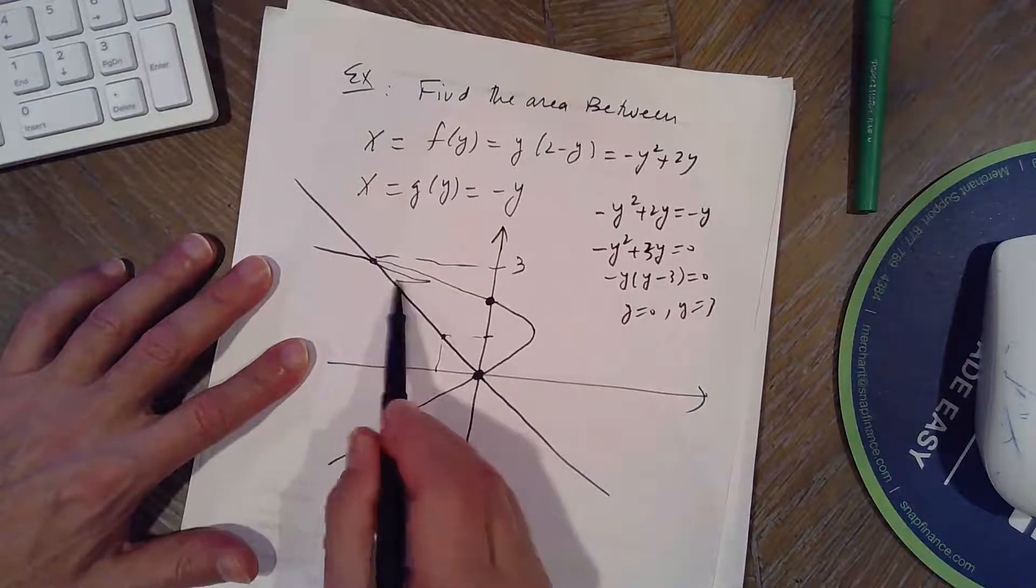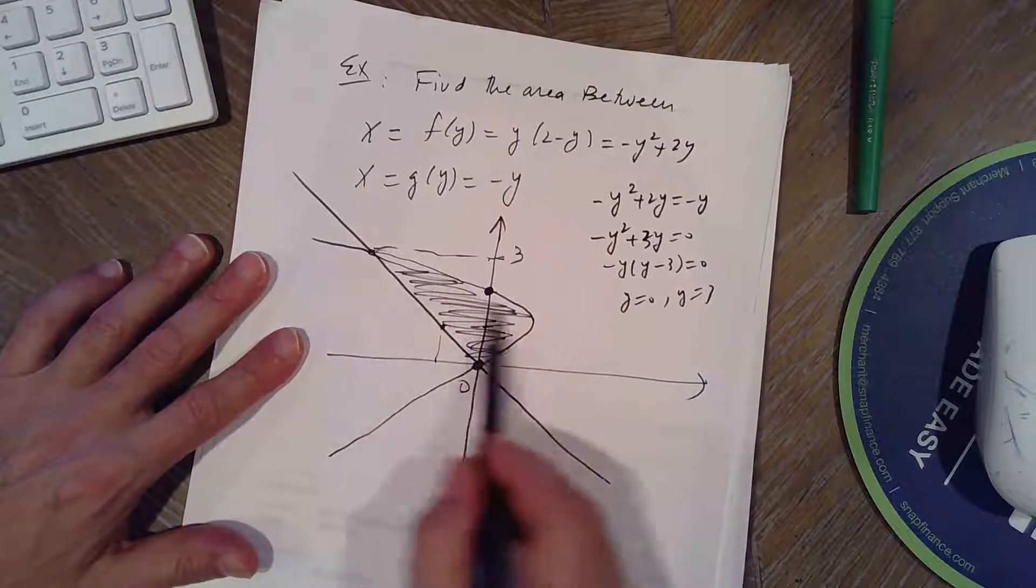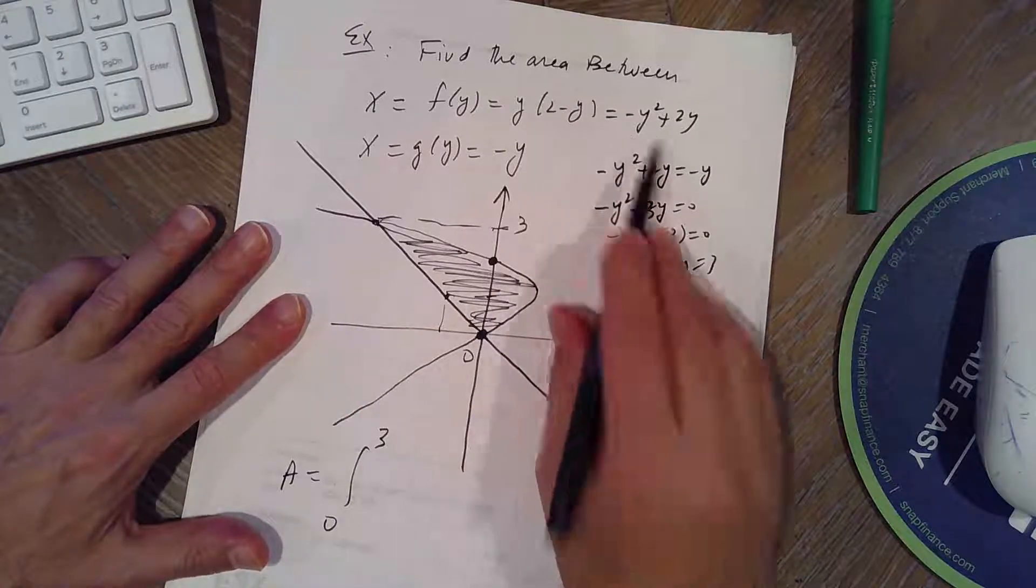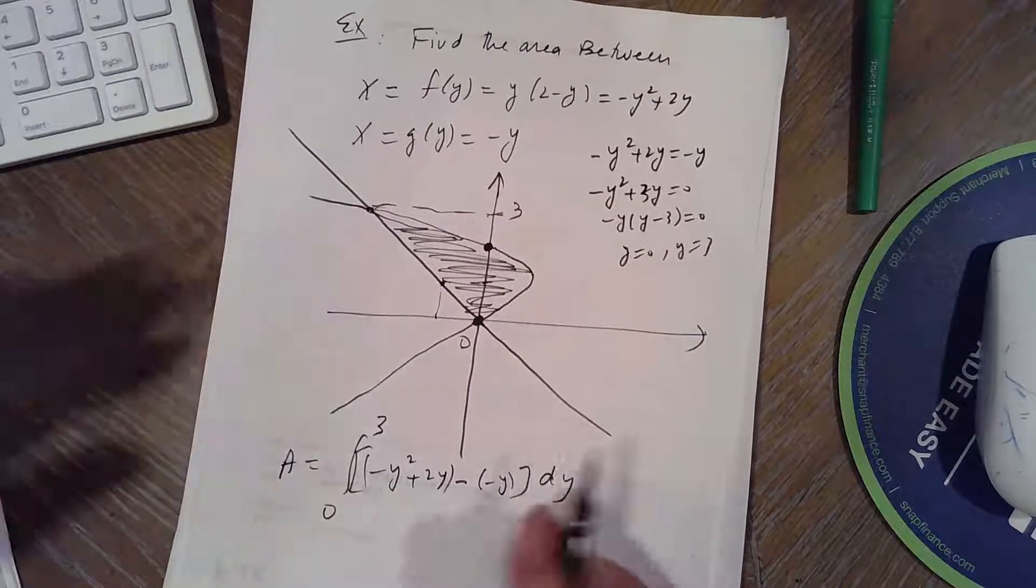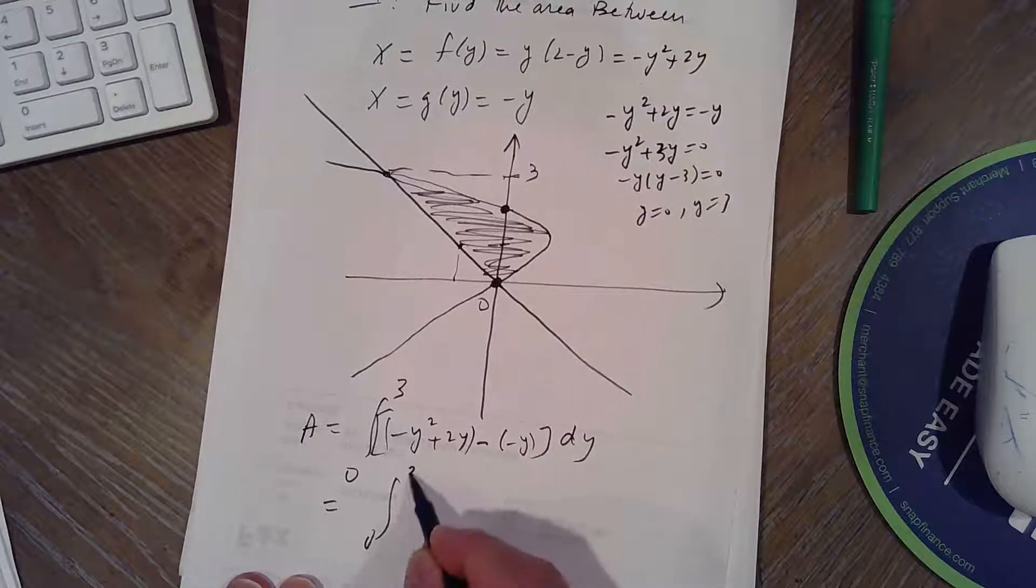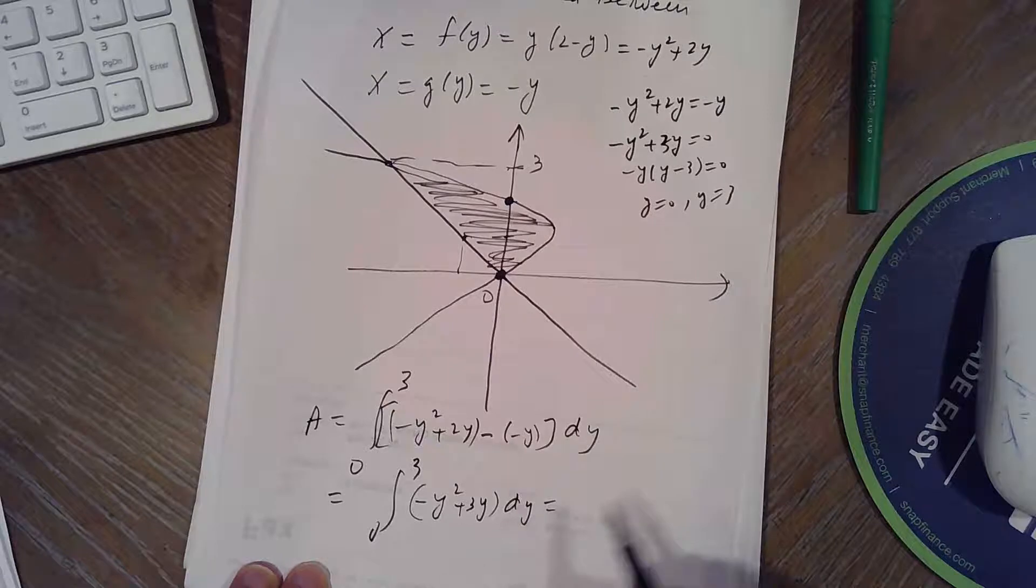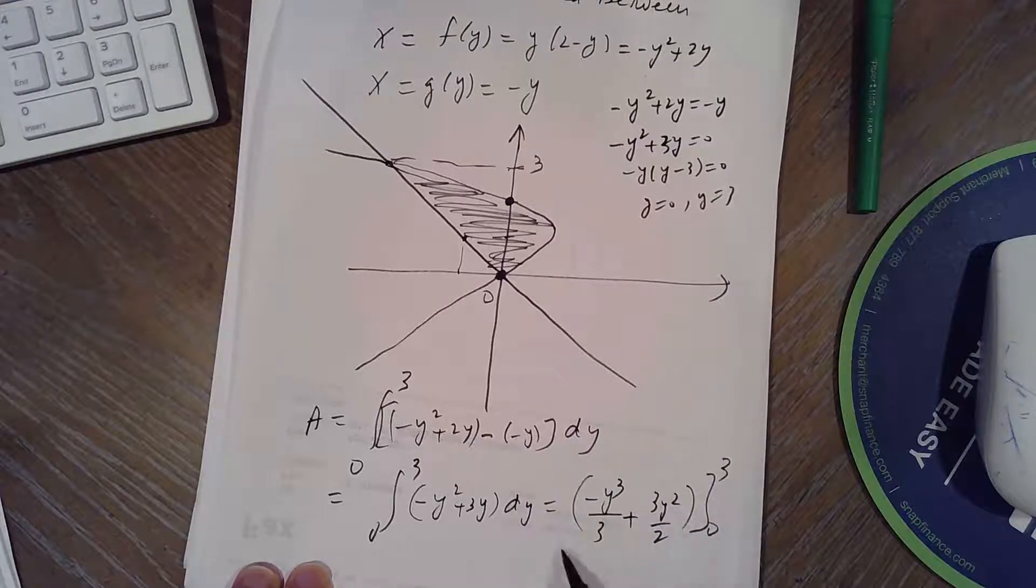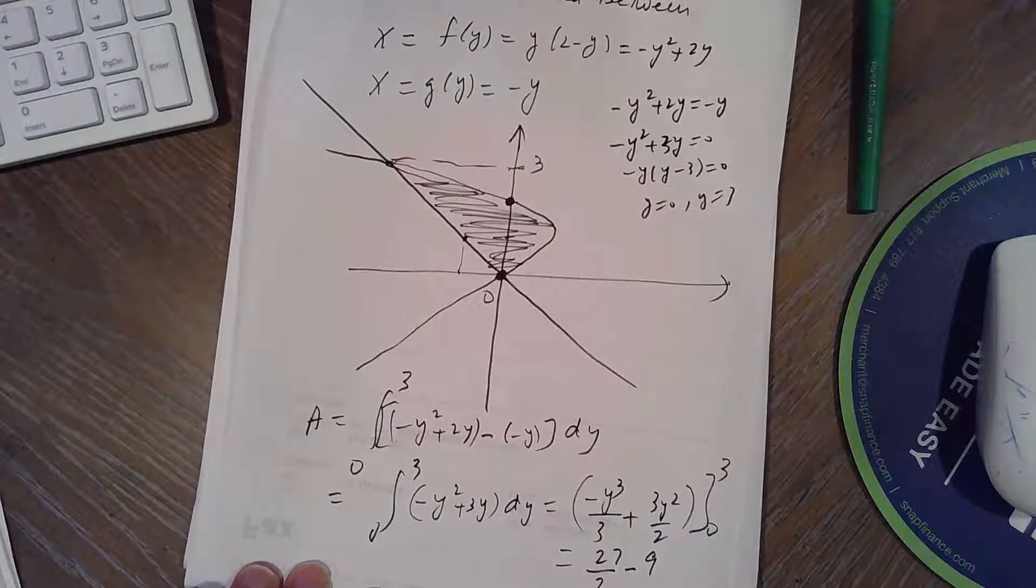So if we want to integrate sideways, with respect to Y, we're going to go from 0 to 3, that's where they cross. We're going to do right minus left, so area is from 0 to 3, the right curve is negative Y squared plus 2Y, and left curve is negative Y DY, which would be negative Y squared plus 3Y, which is negative Y cubed over 3 plus 3Y squared over 2, between 0 and 3, which is 27 over 2 minus 9, which is 9 over 2 square units.